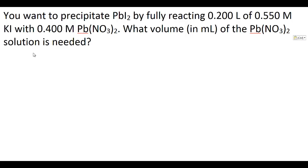Hi, this is Sonia Doucette. In this video, I'll show you how to find the volume of one solution needed to react with another solution for some desired product when you know the volume and molarity of one solution and only the molarity of the other. This problem says you want to precipitate lead iodide by fully reacting 0.200 liters of 0.550 molar potassium iodide with 0.400 molar lead nitrate. What volume in milliliters of the lead nitrate solution is needed?